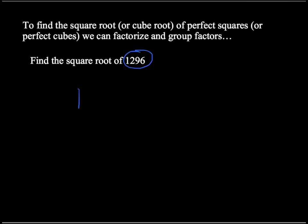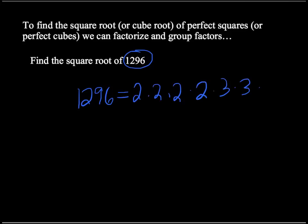I'll give you the prime factorization, since it would take a couple of moments here. If you did that, you would find it's 2 times 2 times 2 times 2 times 3 times 3 times 3 times 3.